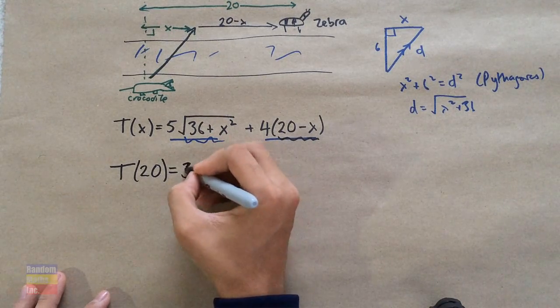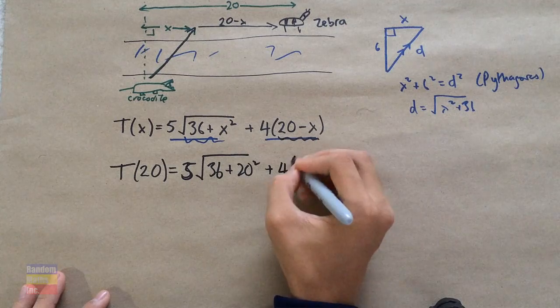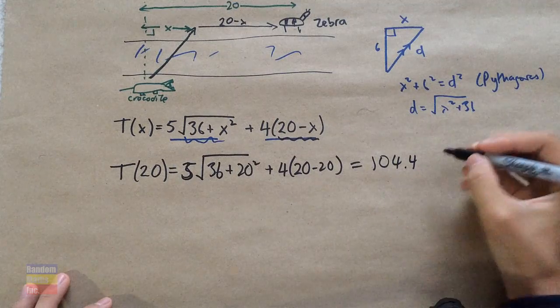First, we calculate the time taken if the crocodile does not travel on land at all — it just goes from its starting point all the way to the zebra through the water in a diagonal path. That means X equals 20, because it ends up 20 meters away where the zebra is. You just plug X equals 20 into the equation and solve. Your answer will be 104.4, but this is in tenths of a second, so you divide by 10 — meaning the crocodile takes 10.44 seconds if it only travels in water.